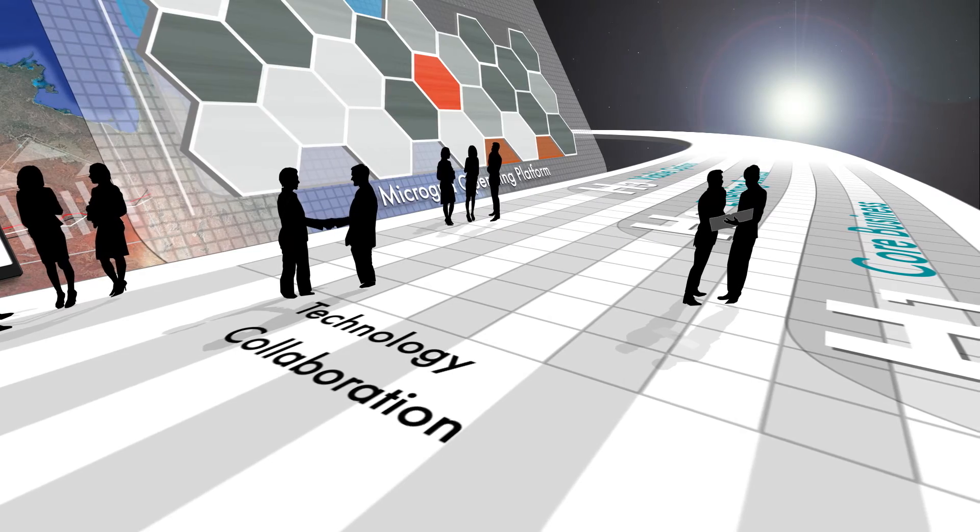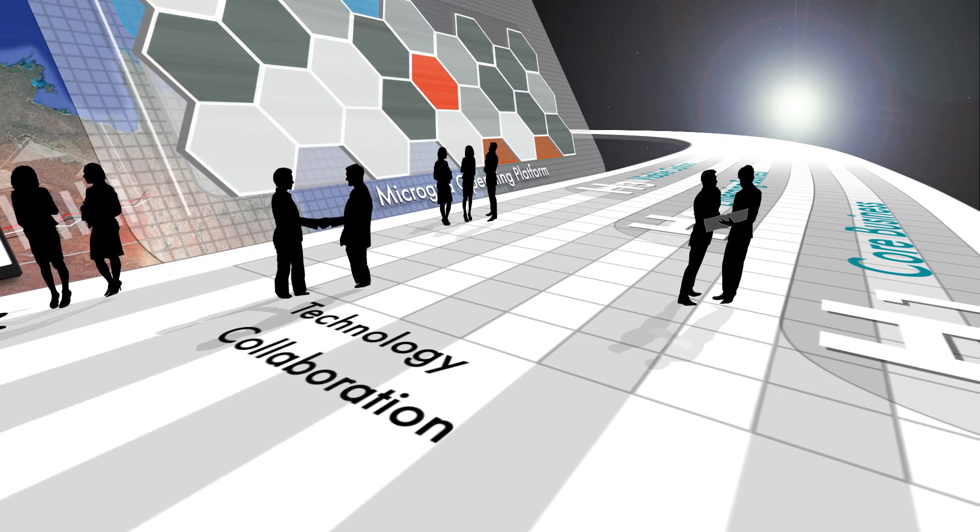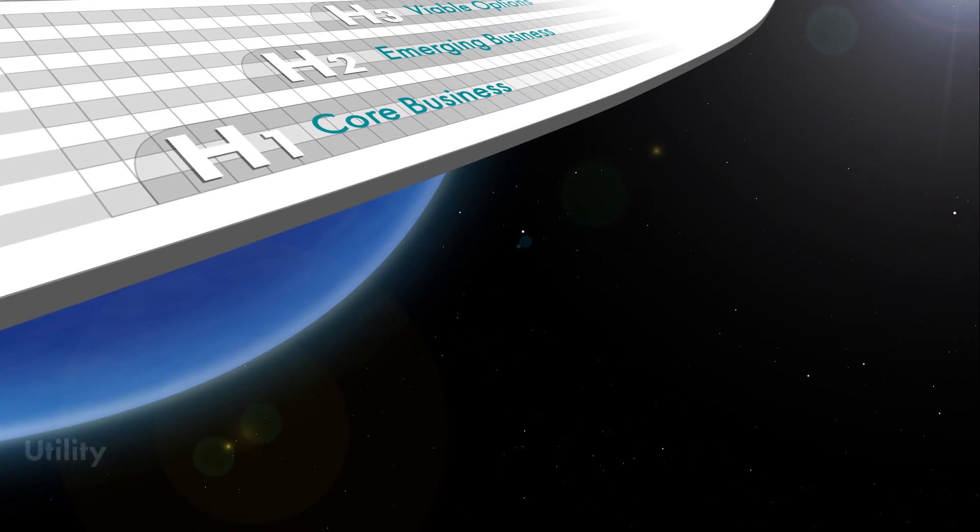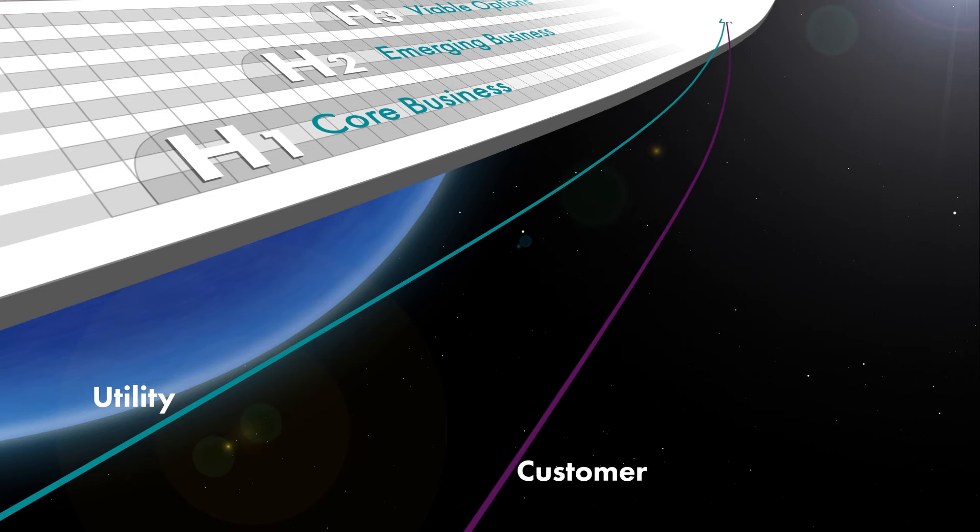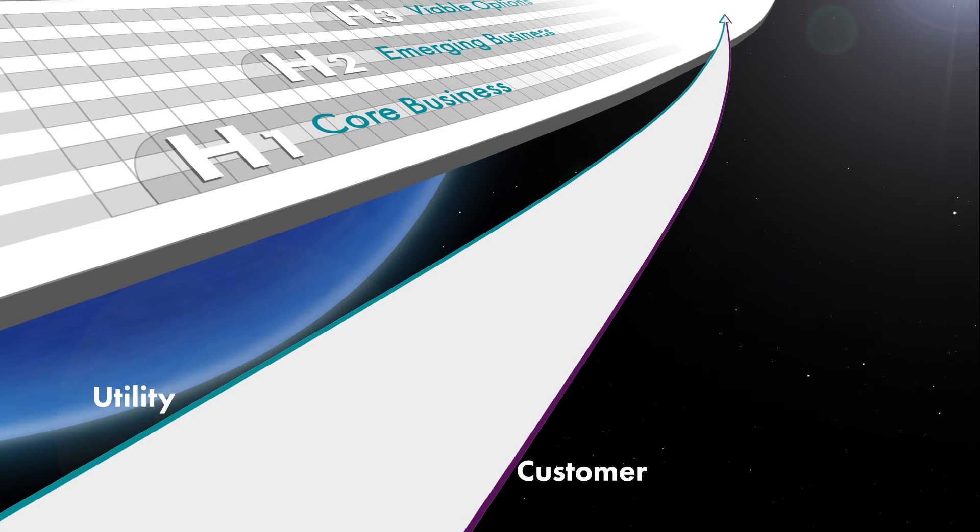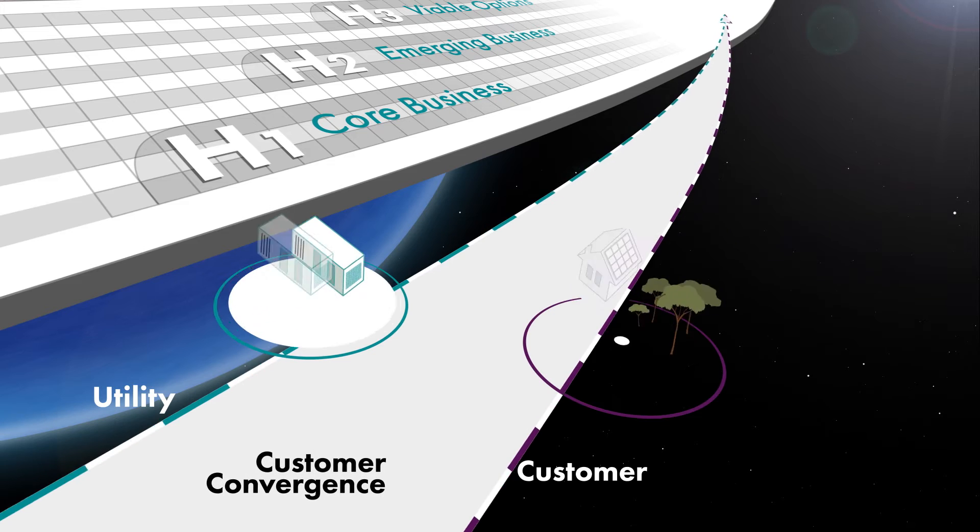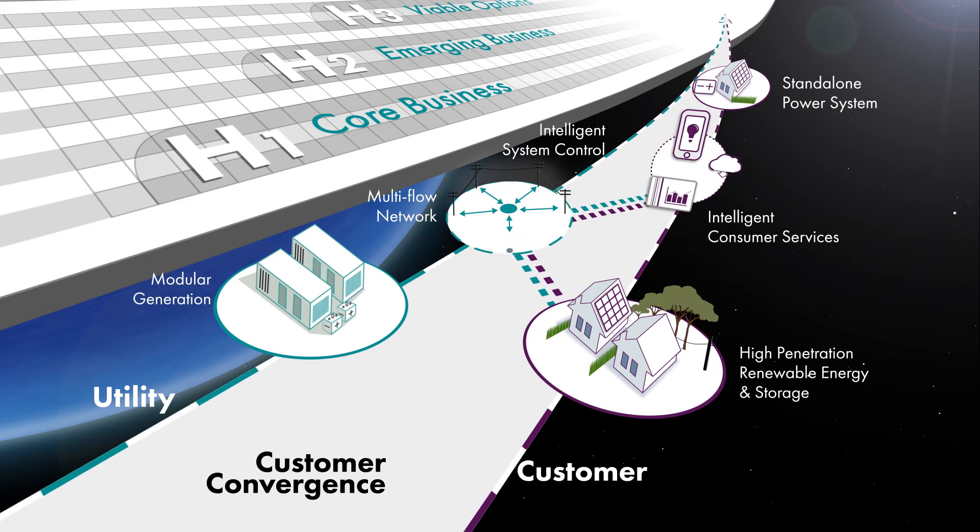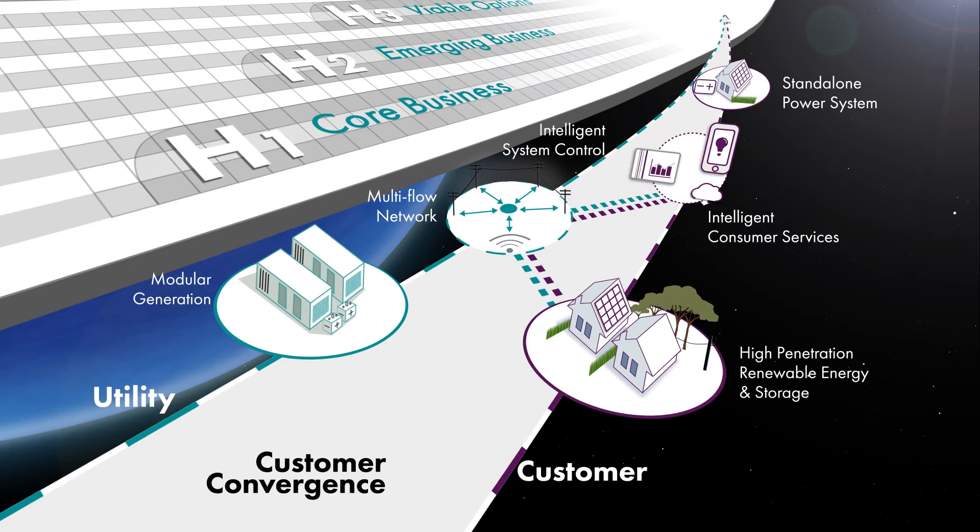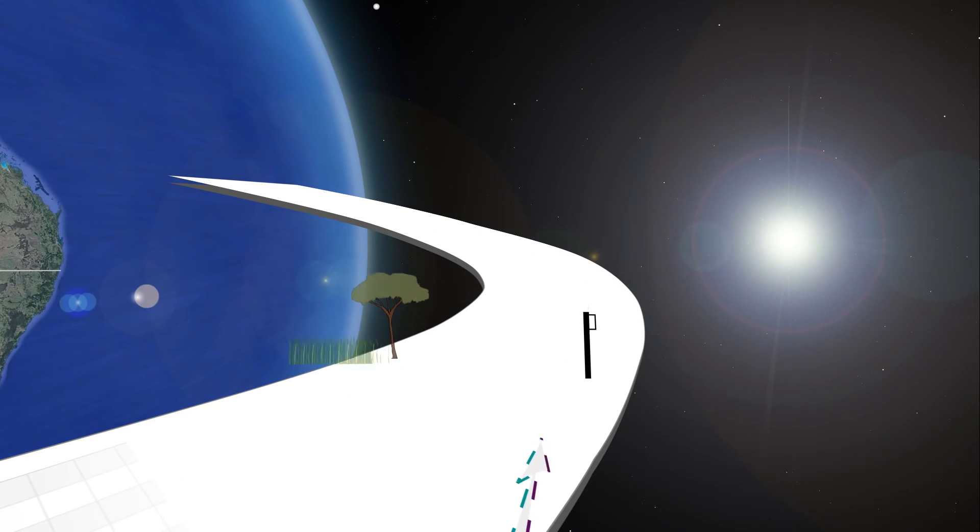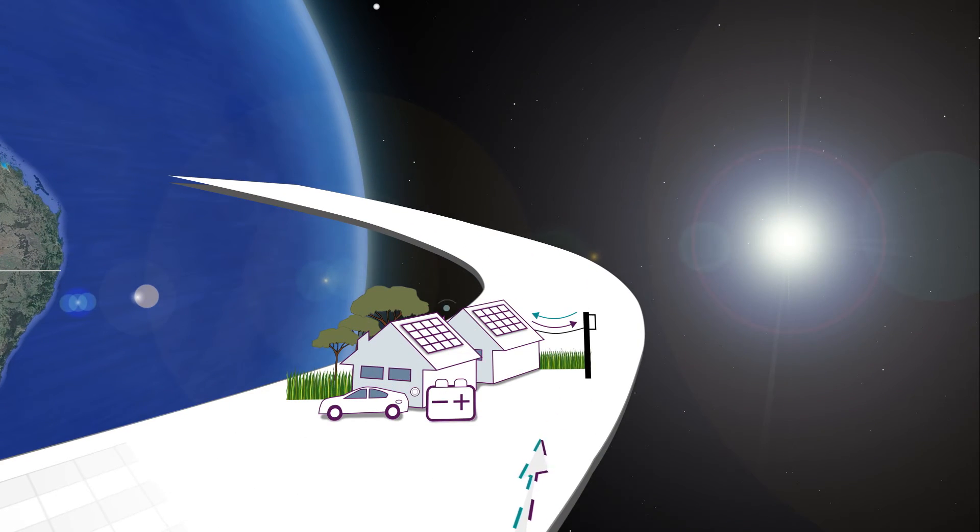Customers are increasingly seeking a greater role in how they receive energy. Horizon Power is working with its customers to eliminate barriers to a new energy future. Customer convergence is how we create customer choice by developing intelligent and relevant distributed energy resources to meet the needs and desires of our customers and become their trusted advisor.